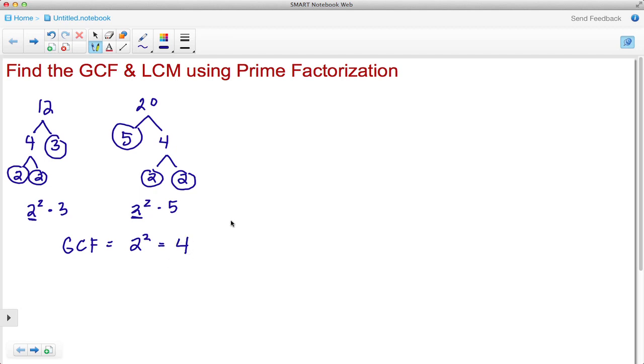Here we see that the greatest common factor between 12 and 20 is 4. And now let's move on to the LCM.